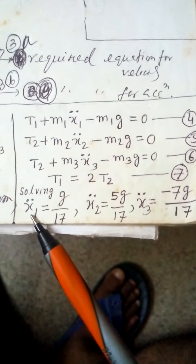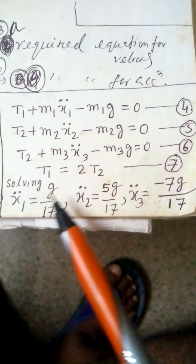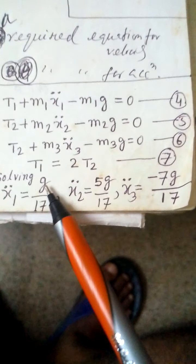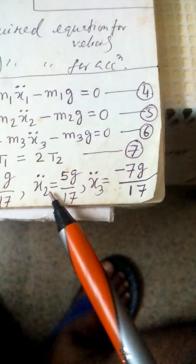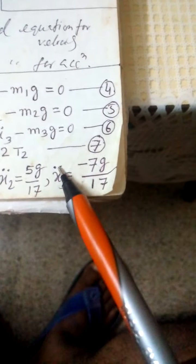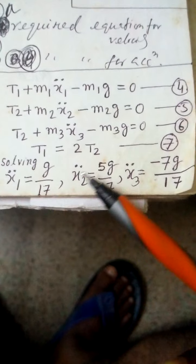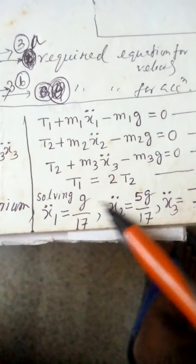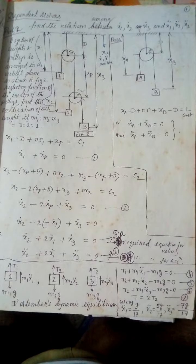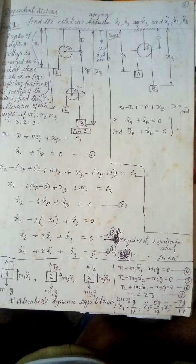Solving all these equations together takes some time, but the final results are: x1_double_dot equals G divided by 17, x2_double_dot equals 5G divided by 17, and x3_double_dot equals minus 7G divided by 17, where G is 9.81 m/s². The negative sign for x3 means it moves opposite to the assumed positive direction. This completes the dependent motion analysis.